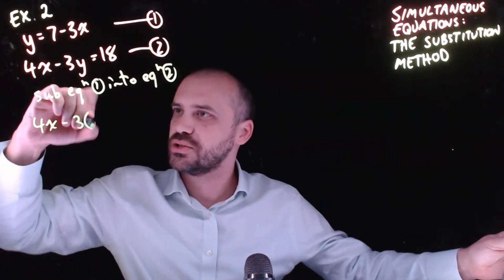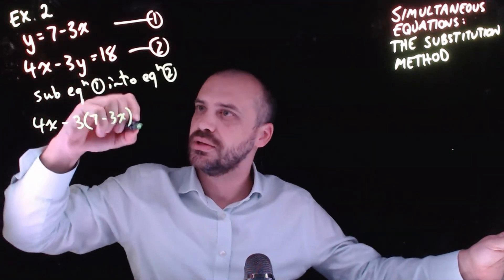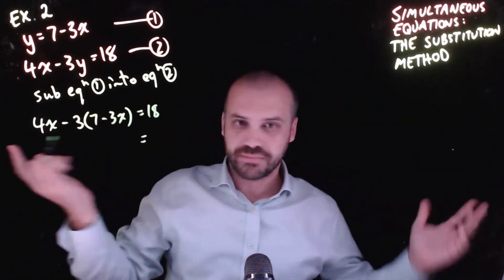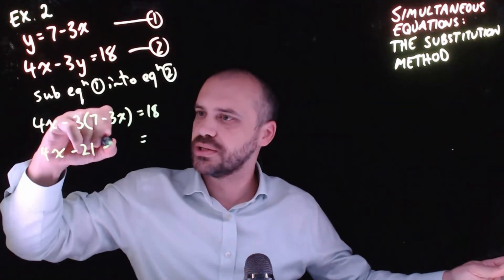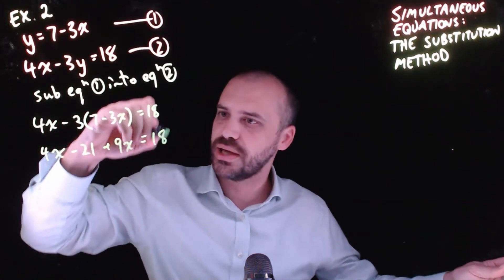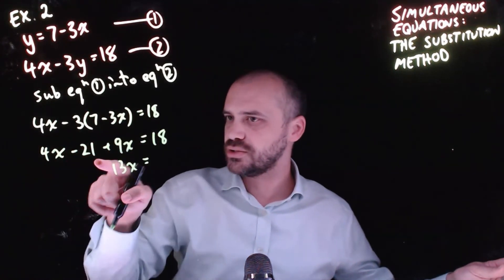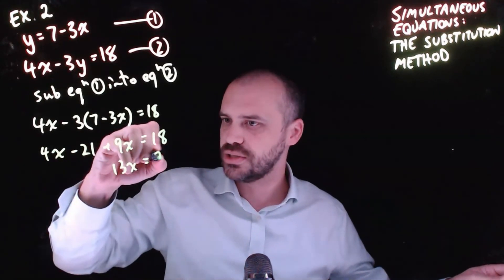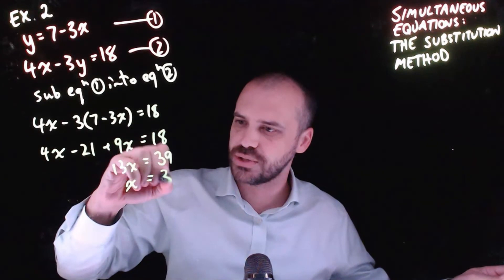4x - 3 times y, which is 7 - 3x, equals 18. Okay, and then we solve this the same way we did the last one. 4x - 21 + 9x = 18. 9x plus 4x is 13x. Adding 21 to this, we get 39. So 13x = 39 divided by 13, which is 3.